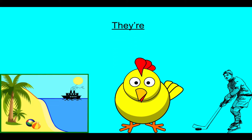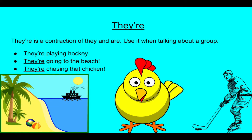They're — T-H-E-Y apostrophe-R-E. They're is a contraction of they and are. Use it when talking about a group. Here are some examples: They're playing hockey. They're going to the beach. They're chasing that chicken.